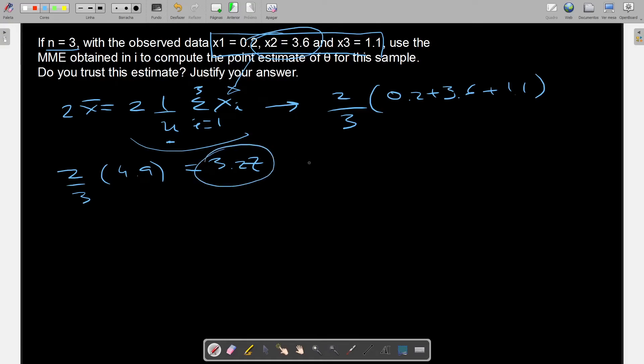So essentially what you are saying here from the sample of the observed data is that x follows a uniform distribution where the lowest value is 0, and the highest value is 3.27. But the highest value that you have from the sample is 3.6.